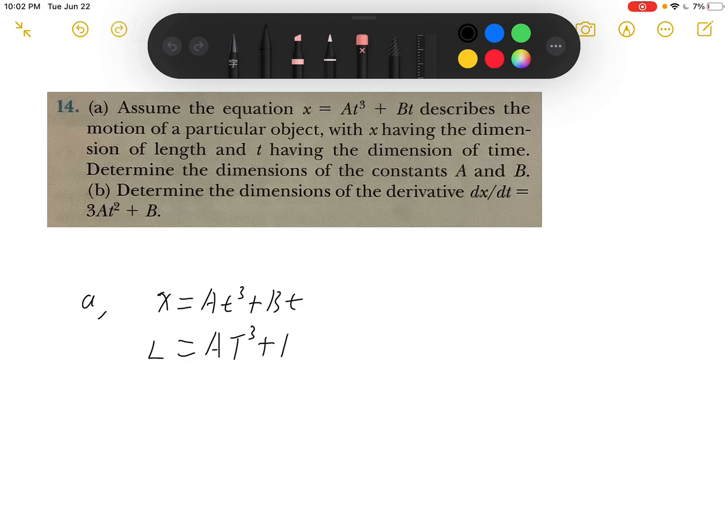To find the dimensions of constant A, we need to make this equal to L. So L equals A times t cube, and A will be L over t cube.